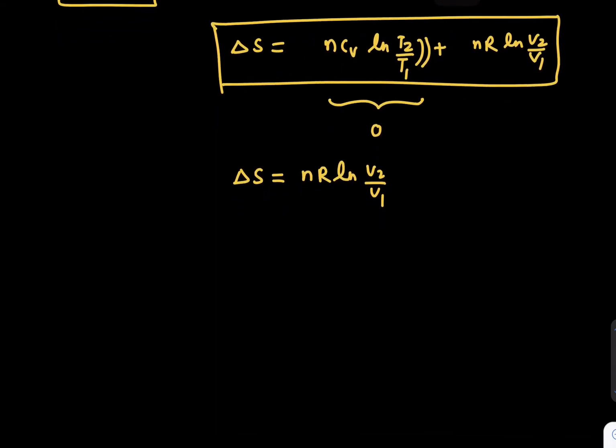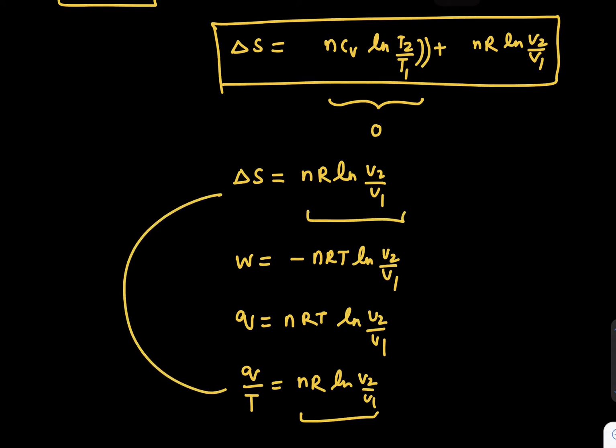When you solve the value of work done for isothermal cases, you got the answer W is minus n R T ln(V₂/V₁), and Q was n R T ln(V₂/V₁). So if you observe Q divided by T, it is n R ln(V₂/V₁), which is the same number written here. These two numbers match, as ΔS equals Q/T.